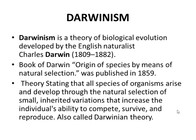Darwinism is a theory of biological evolution developed by English naturalist Charles Darwin. His book, The Origin of Species by Means of Natural Selection, was published in 1859. The theory states that all species of organisms rise and develop through the natural selection of small inherited variations that increase the individual's ability to compete, survive and reproduce. This theory is also called the Darwinian theory.